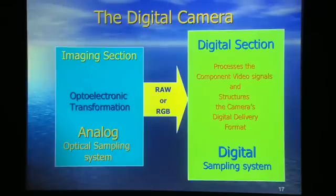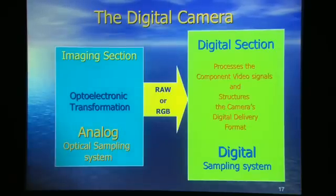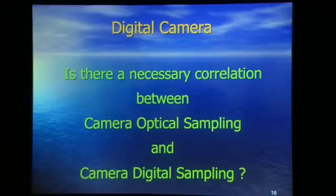That resolution, whatever it is, is handed over to the digital section of the camera or camcorder where it is then digitally represented. The resolution, plus the dynamic range, the exposure latitude, the tonal reproduction — all of the important imaging attributes have to be represented digitally. Is there a linkage between the number of imaging pixels and the number of digital pixels? Well, there can be, and there may not be. We've seen it all — you only have to look across the landscape now and you'll see that it is all over the map.